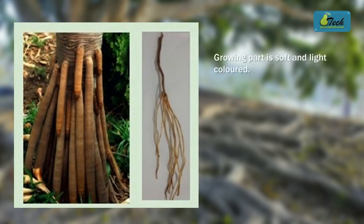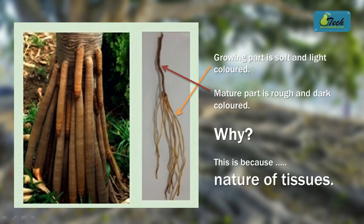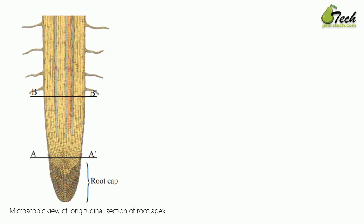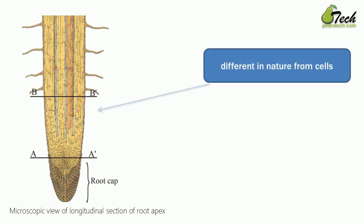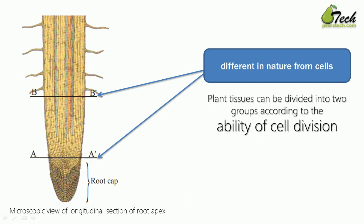If you see this picture of a root, the growing part is soft and light colored, while the matured part is rough and dark colored. This is because of the nature of the tissues — the nature of the tissues causes those colors. This is a microscopic view of a longitudinal section of a root apex; you can see that different parts have different natures.